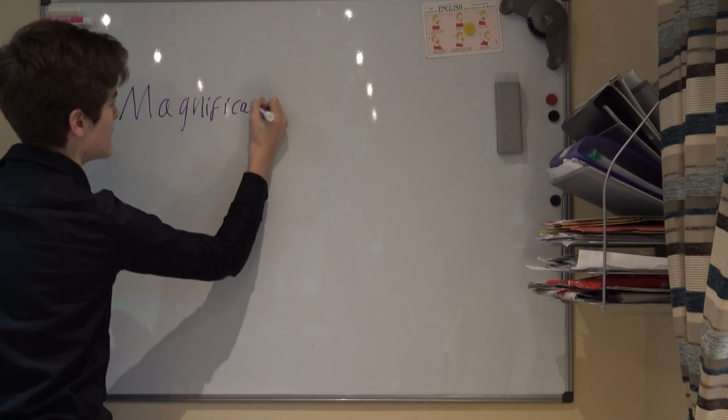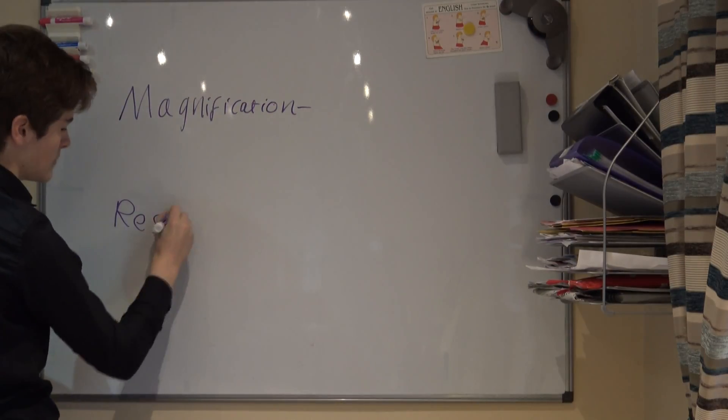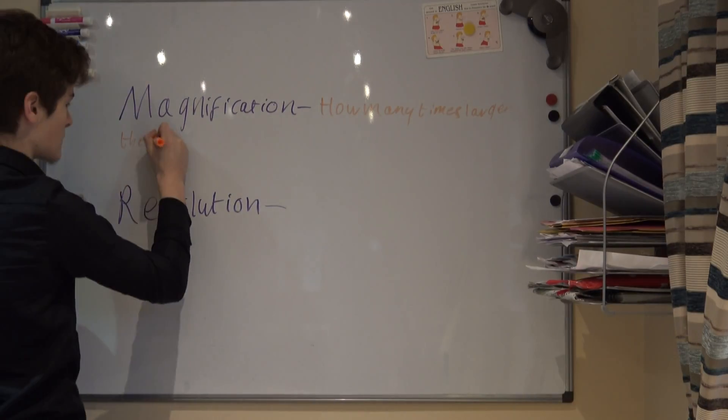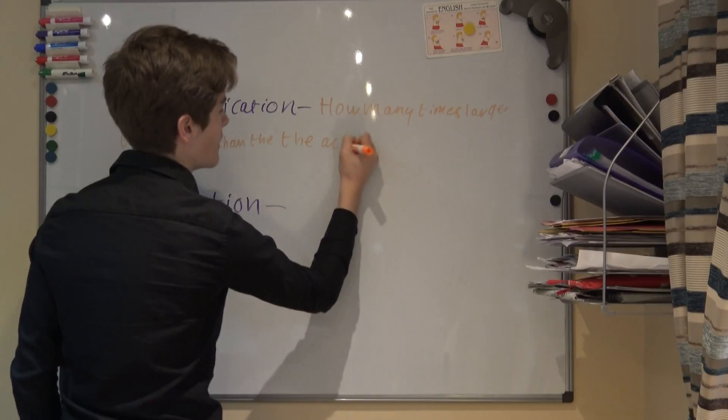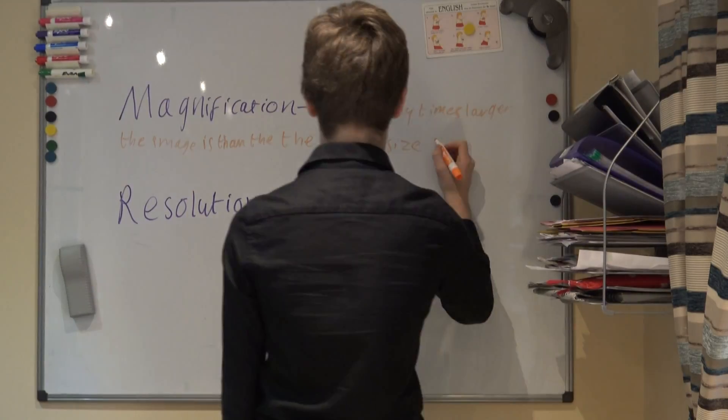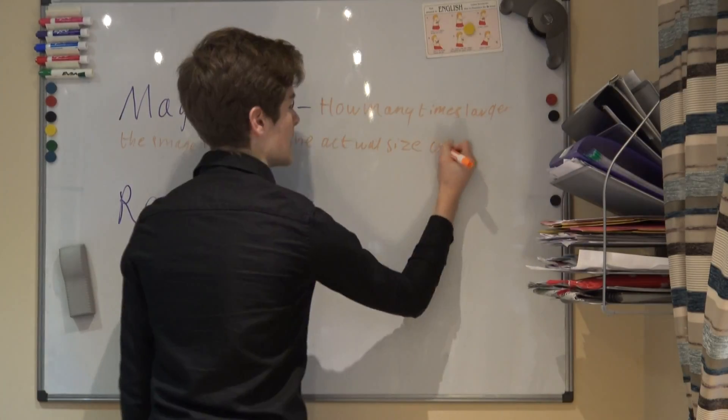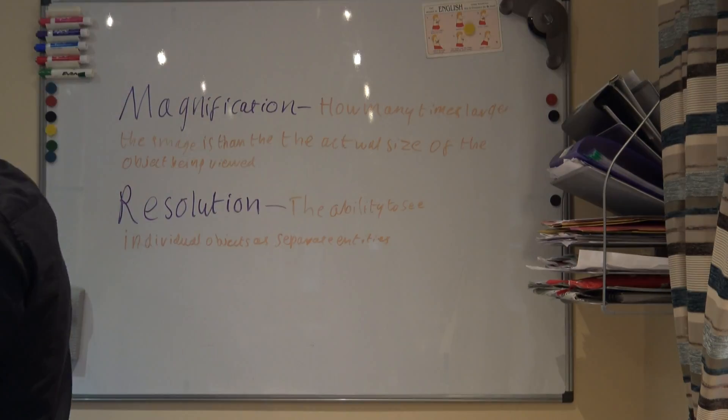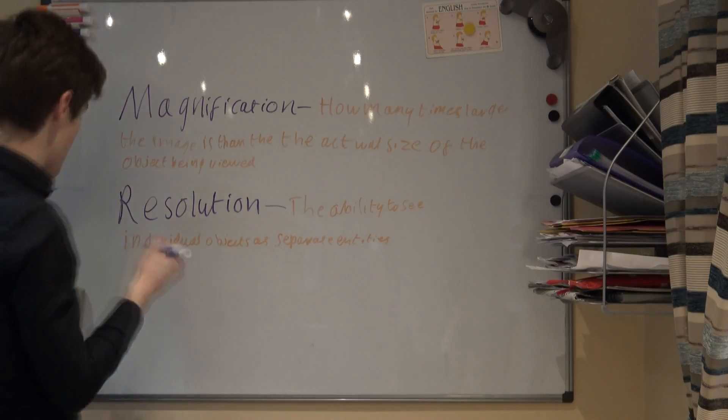When using a microscope, people often use the terms magnification and resolution. Despite being used often together, they are very different. Magnification is how many times larger the image is than the actual size of the object being viewed. It is important to know that simply magnifying an object does not increase the amount of detail being seen. For this, resolution is needed.